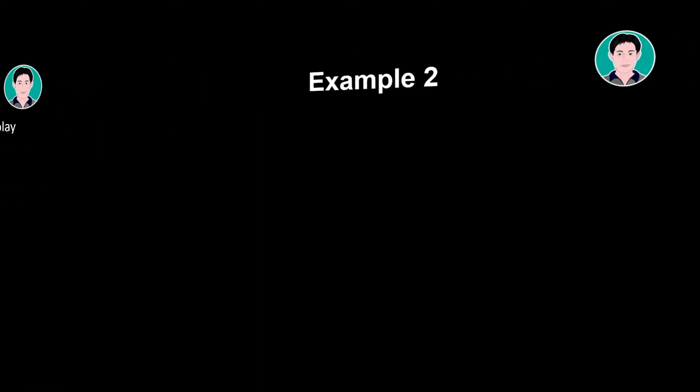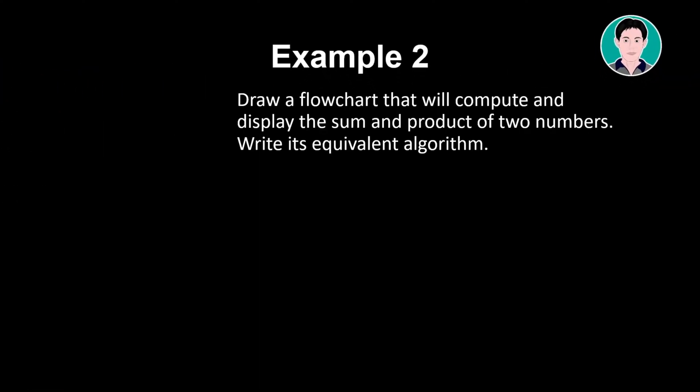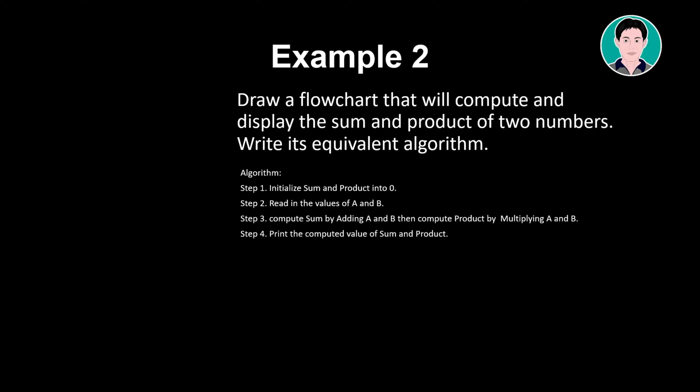Example 2. Draw a flowchart that will compute and display the sum and product of two numbers. Write its equivalent algorithm. Algorithm: Initialize sum and product to 0. Read in the values of A and B. Compute sum by adding A and B, then compute product by multiplying A and B. Print the computed value of sum and product.